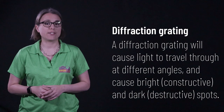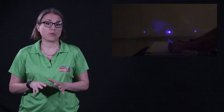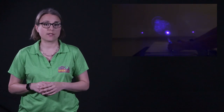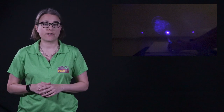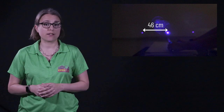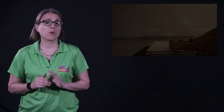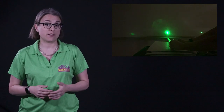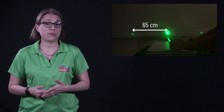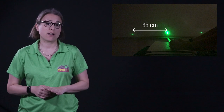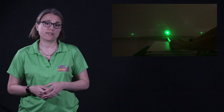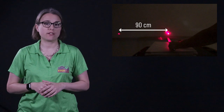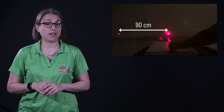In this demo, I shoot a blue laser pointer through a diffraction grating that has 1,000 lines per millimeter. On a screen one meter away, we can observe each of the bright spots indicating points of constructive interference. I used a ruler to measure the distance between each spot, which is 46 centimeters. When I repeat this experiment using a green laser pointer the same distance away and using the same diffraction grating, the spots are now spaced farther apart — 65 centimeters. This is because the larger wavelength of green light, as compared to blue light, given the same spacing on the diffraction grating, will cause the light to bend more. Repeating the experiment with a red pointer gives the largest distance between spots, 90 centimeters. Red has the longest wavelength of visible light and will therefore bend the most.